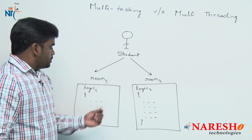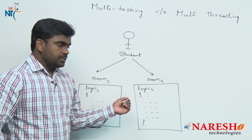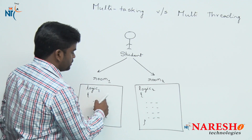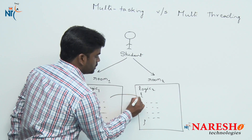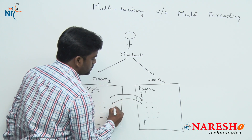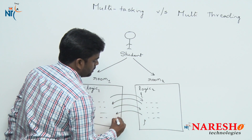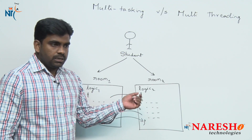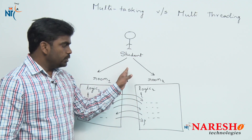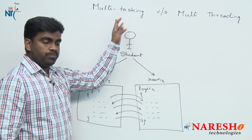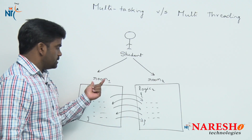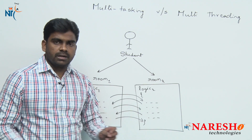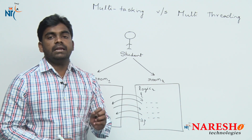In multitasking, the student cannot switch to the next program after completing the first — instead, after some instructions, the student should switch to the other room and back, like that switching from one room to another. Multitasking means giving more than one task, but the process space is divided into n parts. Just like room 1 is one process space and room 2 is another — n process spaces are required to perform n number of tasks.